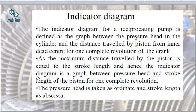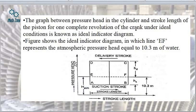The indicator diagram for a reciprocating pump is a graph drawn between pressure head and the distance travelled by the piston from the inner to outer dead center for one complete rotation of the crank. Pressure head is taken as the ordinate (y-axis) and stroke length on the x-axis. Hs is the suction head, Hd is the delivery head. The value 10.3 meters represents atmospheric pressure, which equals 76 cm of mercury, 760 mm of mercury, 10.3 m of water, or 101.325 kPa — values that should be remembered as they may be directly asked in exam questions.